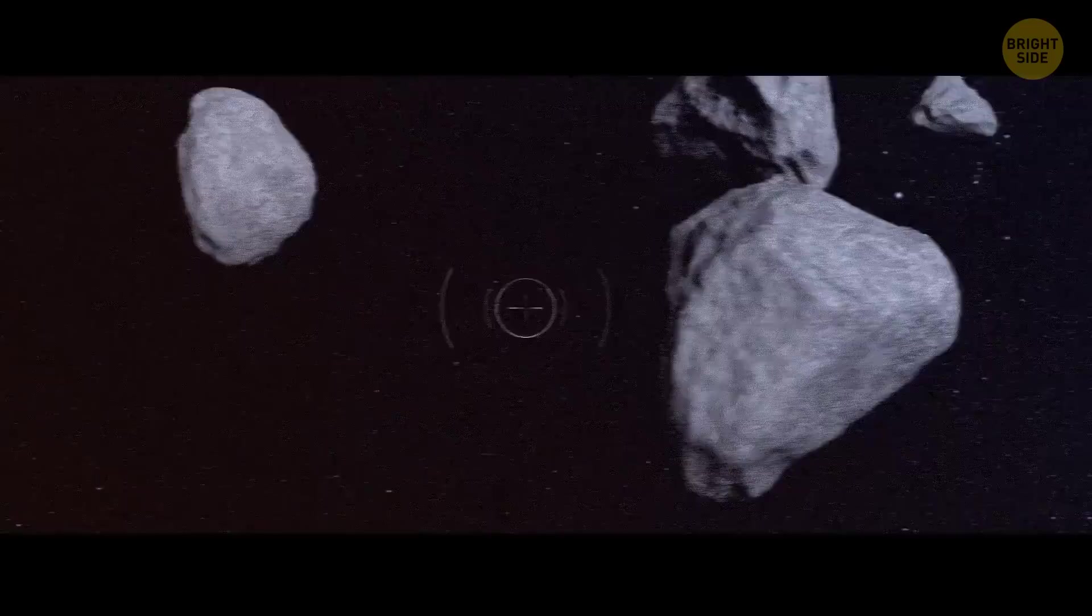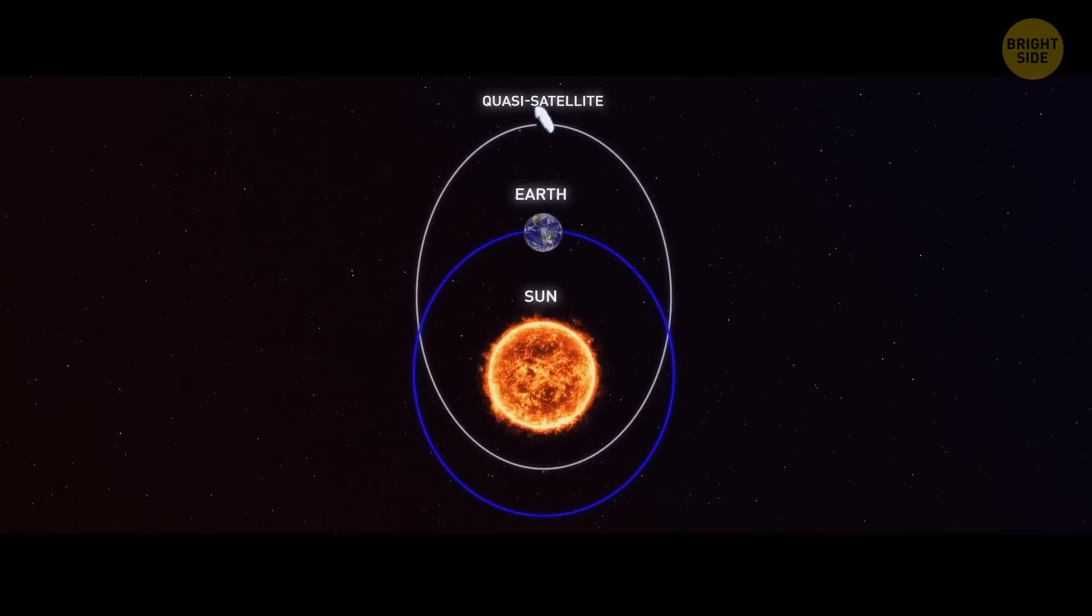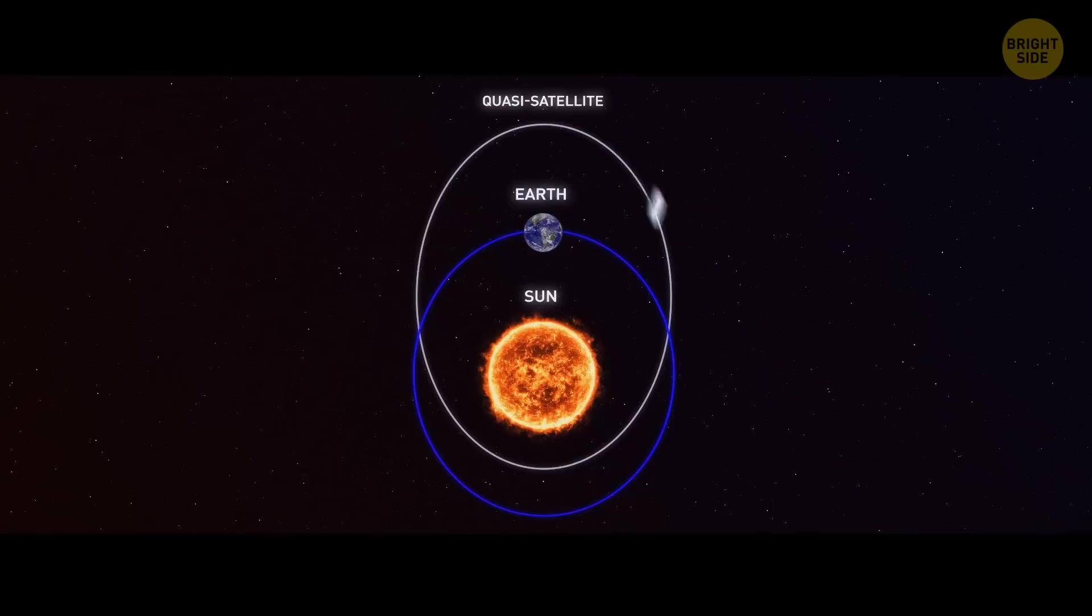They named it Kamo Oaliwa, which is a Hawaiian word that means wobbling celestial object. The rock didn't match any near-Earth asteroids scientists had already been familiar with. Instead, that piece had a pattern of reflected light similar to that of the Moon rocks astronauts had brought back from NASA missions. This fragment turned out to be a quasi-satellite, which is a kind of asteroid that orbits both our planet and the Sun. It repeatedly circles Earth and has a quite unusual tilt.